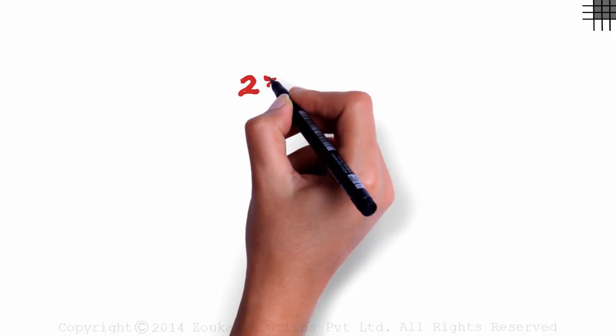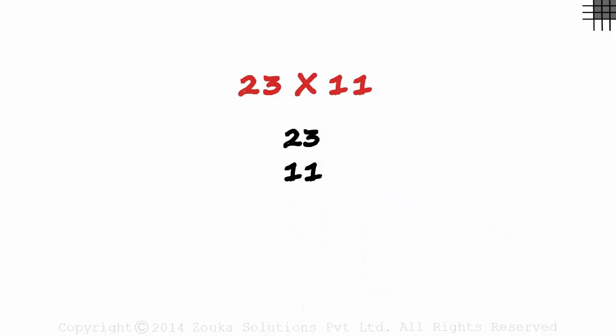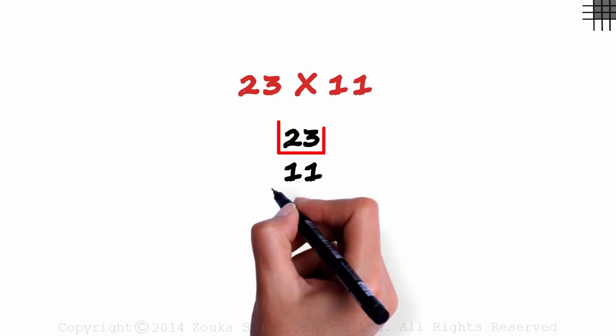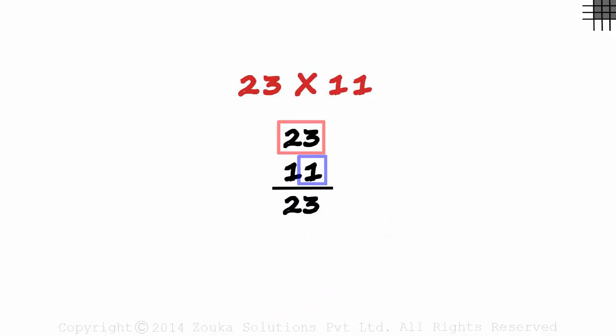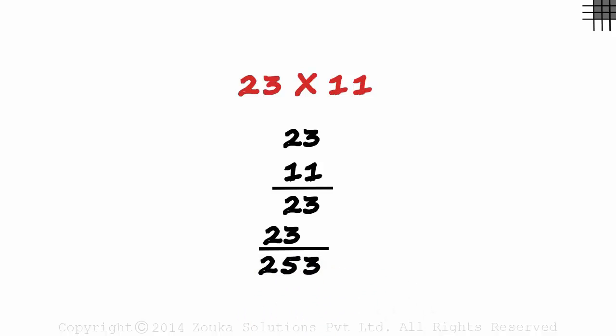Before we move on to the shortcuts, we try multiplying 23 with 11 in the normal way. We write 23 and then write 11 under it. 23 times 1 is 23. We leave a place here and 23 times 1 again is 23. 3, 5, 2. 23 times 11 is 253. Took us about 7 seconds while we could have done it in 2 seconds.